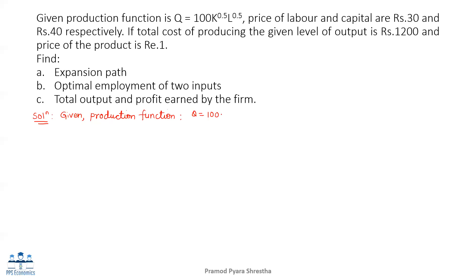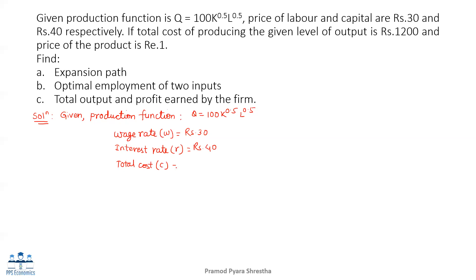The production function is Q equals 100K to the power 0.5 L to the power 0.5. The wage rate, that is price of labor, is rupees 30. The price of capital, or interest rate, is rupees 40. The total cost is rupees 1200, and the price of the product is rupee 1.